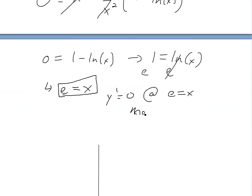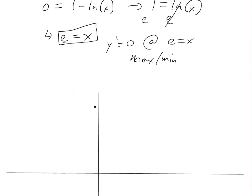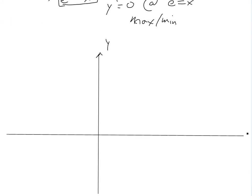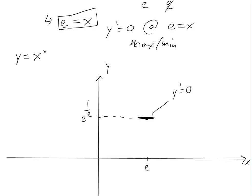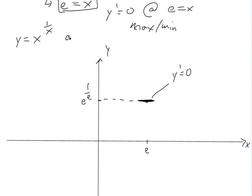This is either a max or min, so we need to look at how the graph looks. On the y-axis, at x equals e we have the value e to the one over e. Now, at x approaching zero, we have x to the one over x — one over x approaches infinity — so it's zero to the power of infinity, which approaches zero. So the function starts near zero, increases, and then we check a large value like x equals 100.